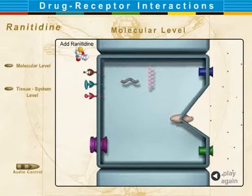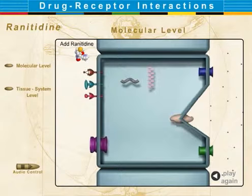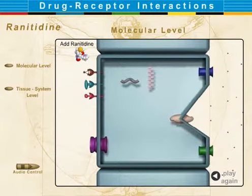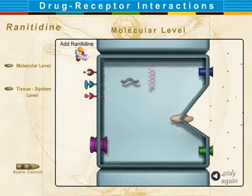The proton heads for the luminal side proton pump, and under the influence of ATP, exchanges for potassium, while the chloride ion exits into gastric fluid through a chloride channel, shown in green.